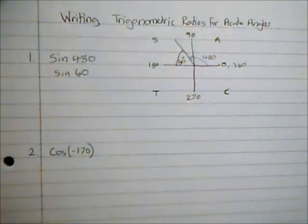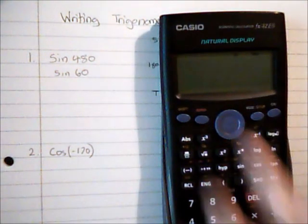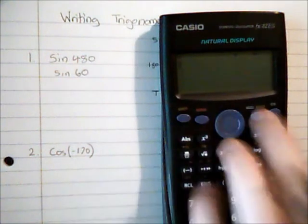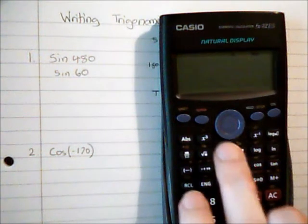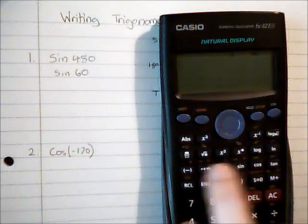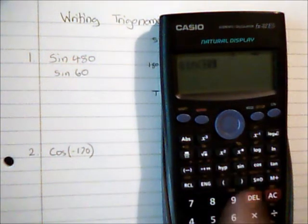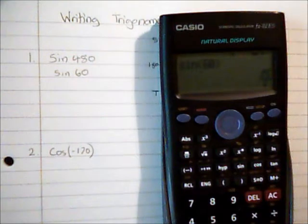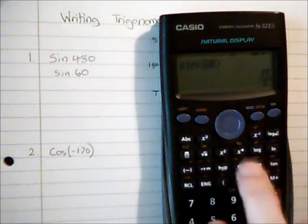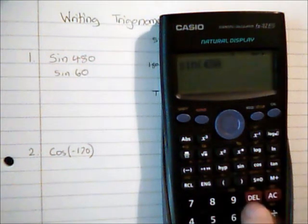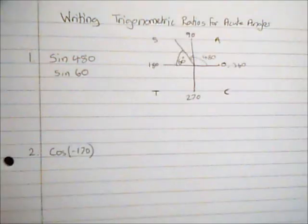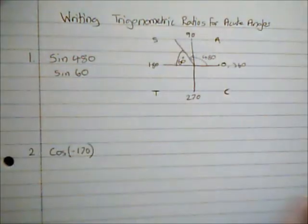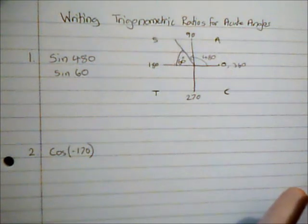And let me just see if that is true when I do it on my calculator. So I'm just going to put it into radians mode. And then I'm going to see sine of 60 is root 3 over 2. Sine of 480 is also root 3 over 2. So they are equivalent and this is now there as an acute angle.